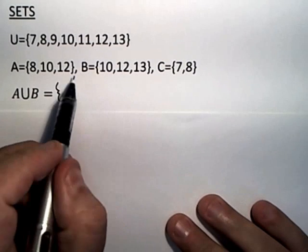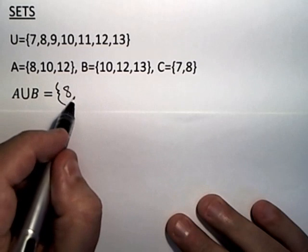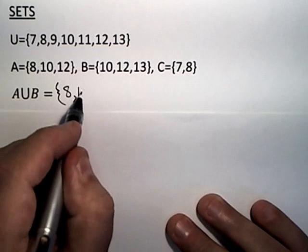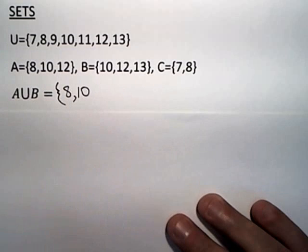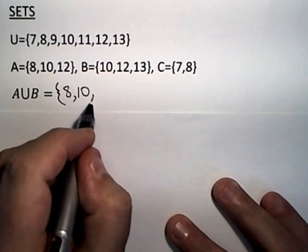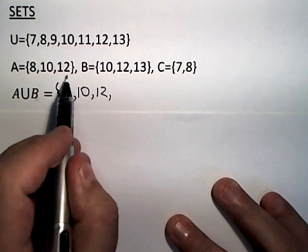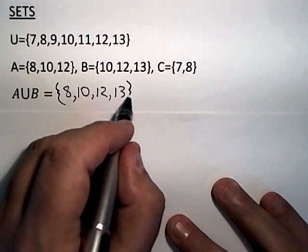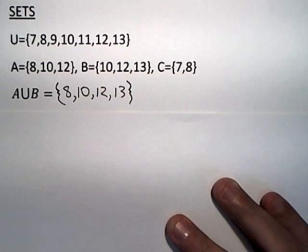So I'm looking in A and B. The smallest number I see is an 8. So I'll write that first. Then I have a 10. It doesn't matter if it appears in both. If it appears in either or both, it goes into the union. And I have a 12. And in B, I have a 13. So if it appears in either or both, then in fact, it is in the union.